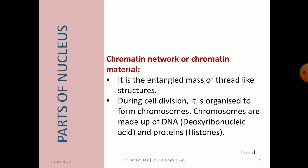Now we will discuss about the chromatin network or chromatin material. It is the entangled mass of thread-like colored material, and it indicates the ability of this material to easily take up a stain for microscopic examination. The chromatin occurs in a non-dividing nucleus. During cell division, it is organized to form chromosomes. Chromosomes are made up of DNA — deoxyribonucleic acid — and proteins, specifically histone proteins.